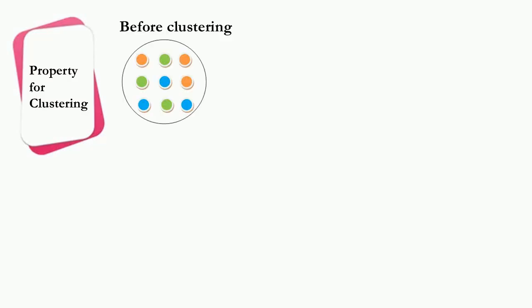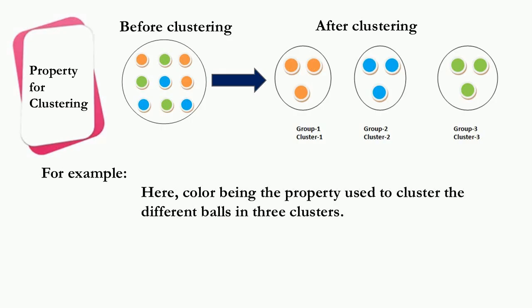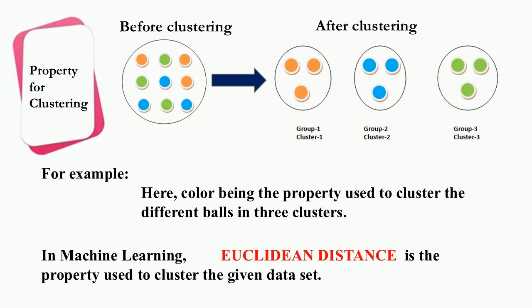There is some common property that is used to do clustering. Just like here, shown is a bin containing a number of different colored balls. Clustering can be very well done using the color as the clustering property, and that is why there are three clusters as shown — color is the clustering property here. Similarly, in K-means clustering, Euclidean distance is the common property used to cluster the dataset.